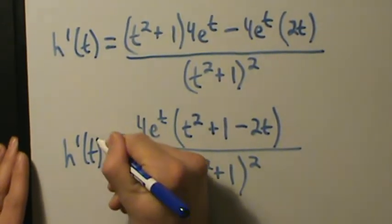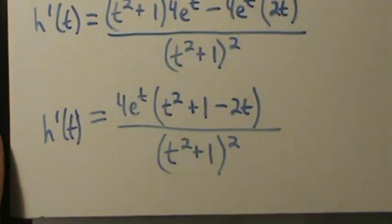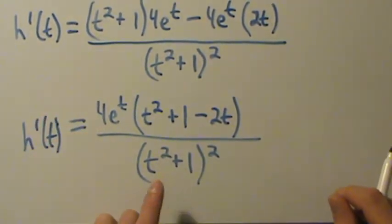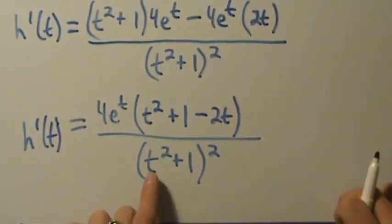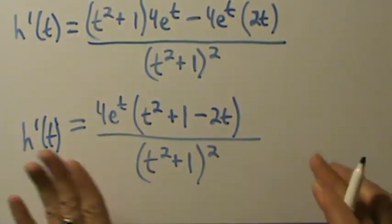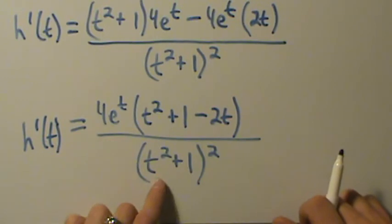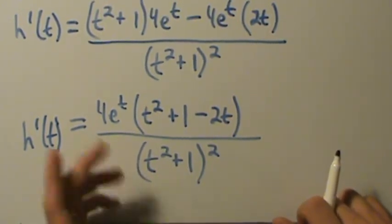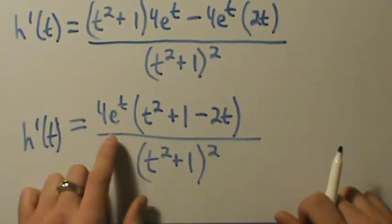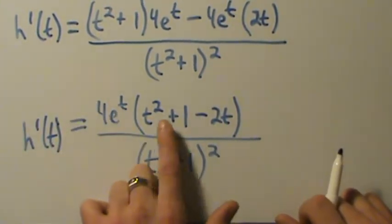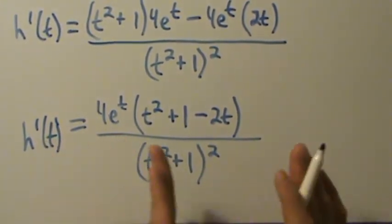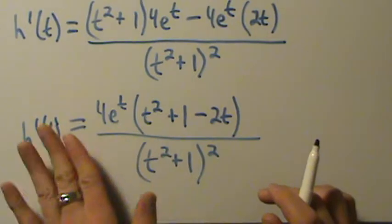Now we want to figure out where the derivative is zero and where it is undefined. It's a fraction, so it's undefined if the bottom is zero. But t squared plus 1, squared — that never equals zero for any real value of t. So there are no values of t that make the denominator zero. Also, e to the t and the polynomial have no domain restrictions, so there's no value of t that makes this derivative undefined.